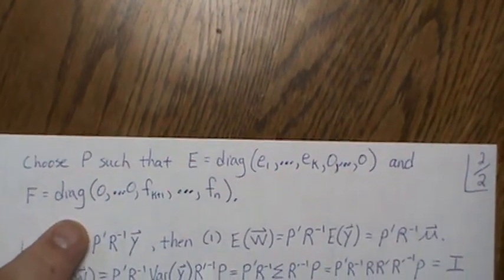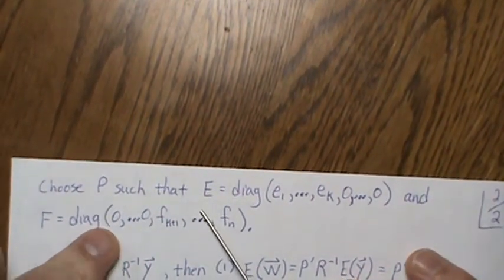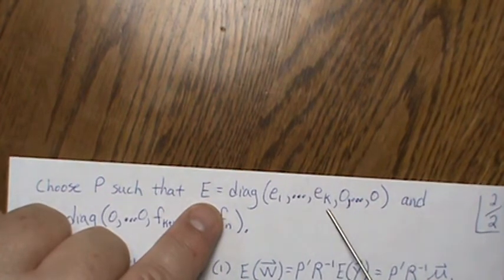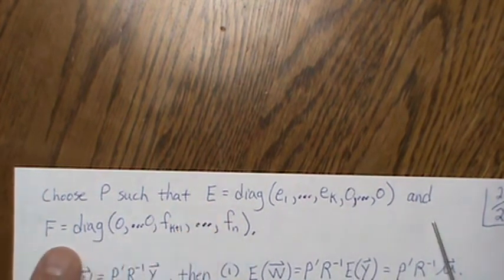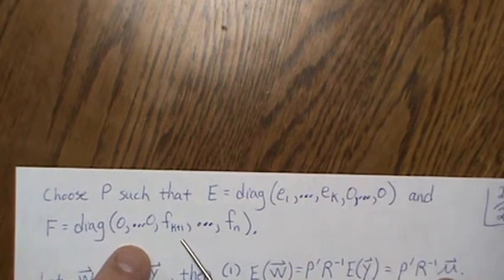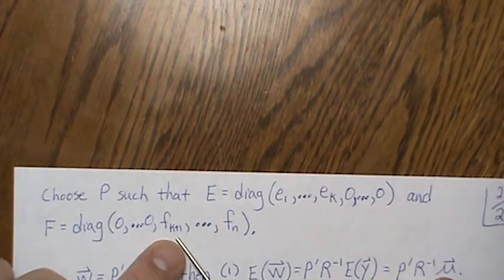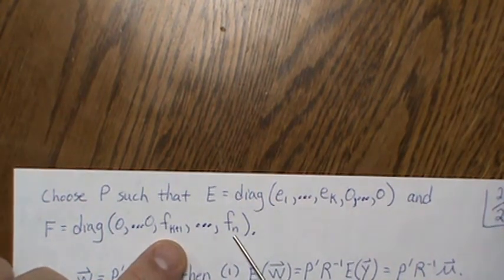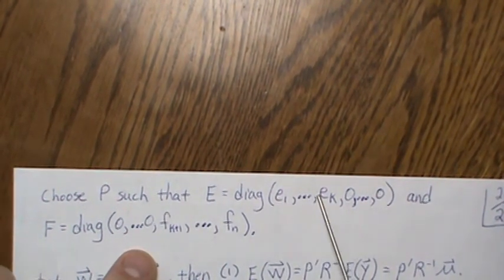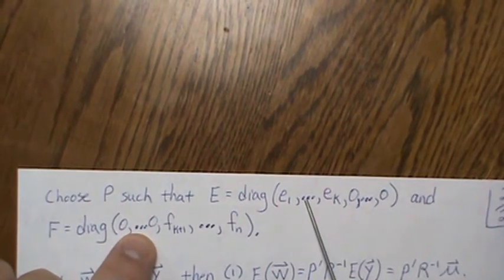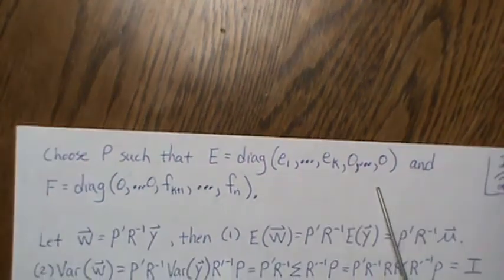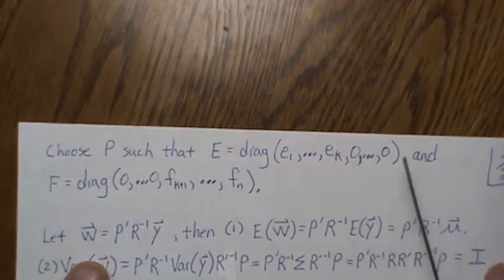So then we want to choose P such that when we diagonalize E, the first K elements are nonzero and the rest are zero. And then that means F is diagonal, which means then we have all zeros. Then the K plus one element may or may not be zero, all the way to F_n. So that way, when these are multiplied together, you get zero. When there's a nonzero element here, the corresponding element has to be zero and vice versa. If these are nonzero, that has to be zero. Of course, they could both be zero. So that's the first big note.